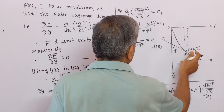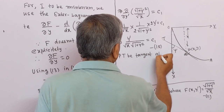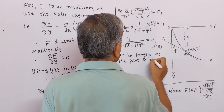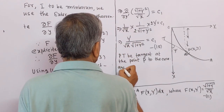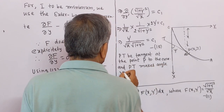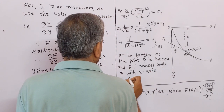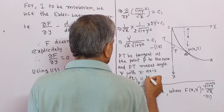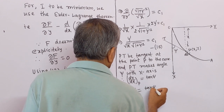Let PT be the tangent at point P to the curve, and let PT make an angle ψ with the x-axis. Therefore, dy/dx at point P equals tan ψ, which implies y' = tan ψ. Let this be equation number 16.